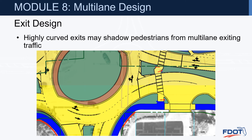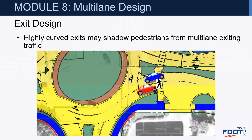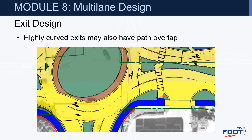Highly curved exits may shadow pedestrians from multilane exiting traffic. For example, a car circulating in the outside lane may yield to a pedestrian in the crosswalk; the pedestrian starts walking out, but the car in the left circulating lane may shadow that pedestrian — the driver may not be able to see them, creating potential for a pedestrian crash. Highly curved exits may also have path overlap: a vehicle in the left circulating lane can easily cross over into the rightmost exit lane.